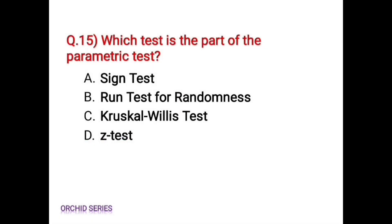Last question: which test is part of the parametric test? The options are: Option A, sign test. Option B, run test for randomness. Option C, Kruskal-Wallis test. Option D, z-test.